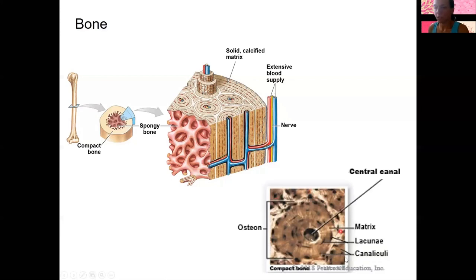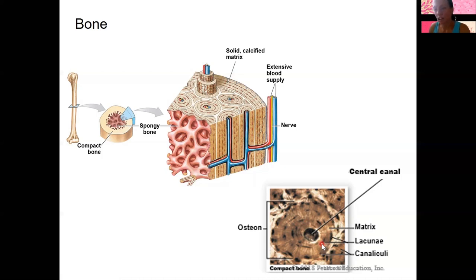Looking at the histology of bone, here is what's called a central canal — this is where blood and nerves travel through. The matrix is made up of calcium carbonate and calcium phosphate — you know calcium is good for your bones — as well as collagen fibers, making a really supportive, strong matrix. Collagen is like steel rods and the minerals are like concrete. The lacunae here, just like in cartilage, contain a cell called an osteocyte. Compared to the bone tissue itself, the cells are not super obvious, but they're super important — they made the matrix and the collagen.